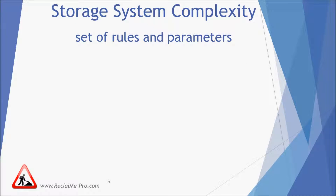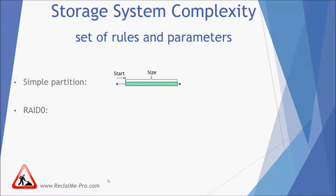The complexity of a storage system is determined by a set of rules and parameters required to describe the system. To illustrate: data location on a simple partition can be described using only two parameters – the beginning of the partition and its size. This is the simplest case. RAID 0 requires one rule – data is cut into blocks of the same size, which are then written to the member disks one by one. The rule employs two parameters – disk order and block size.